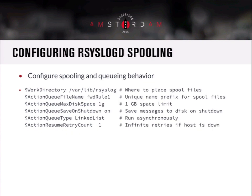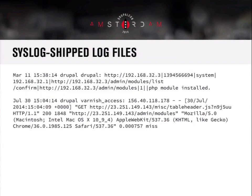As mentioned, rsyslog has the ability to configure queuing behaviors. You can tell it where to place spool files, what prefix to give them, how much disk space it may use if the central log host is down, whether it should save them on shutdown, what type of queue to use, and how many retries to have if it cannot reach the main shipping server.